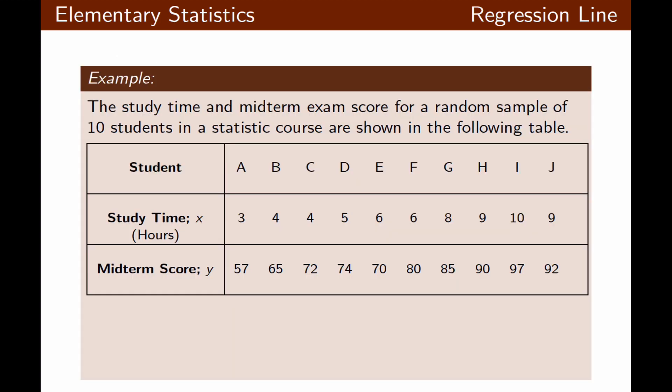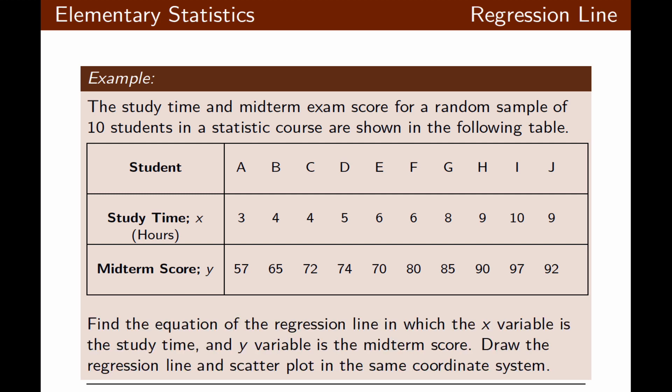Let's look at our previous example of 10 randomly selected students with their study time in hours and midterm score. We want to find the equation of the regression line where x is study time and y is the midterm score. Once we're done, we're going to draw the regression line and the scatter plot in the same coordinate system.